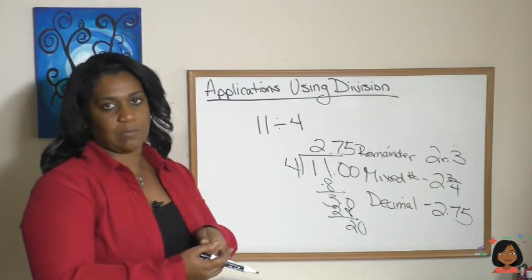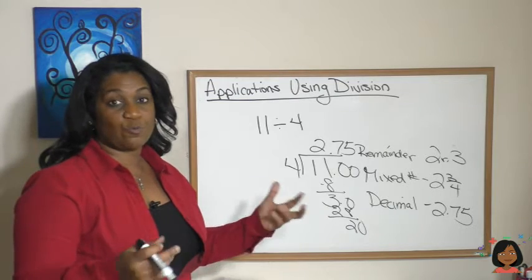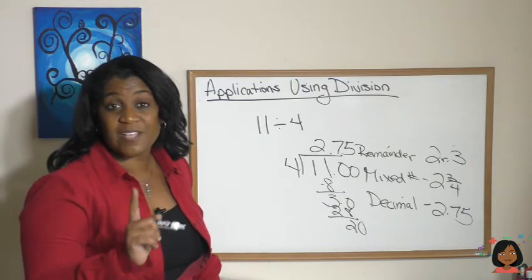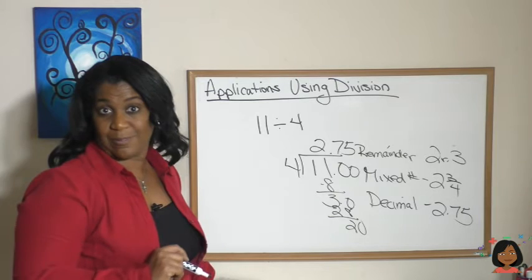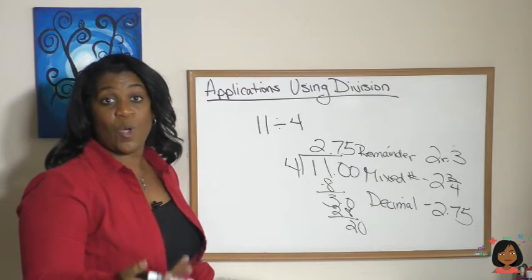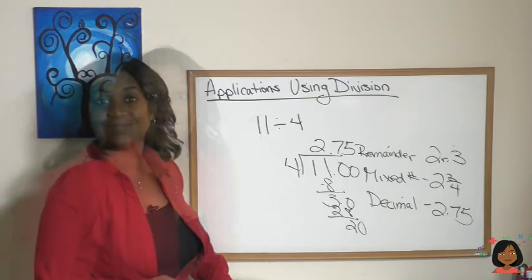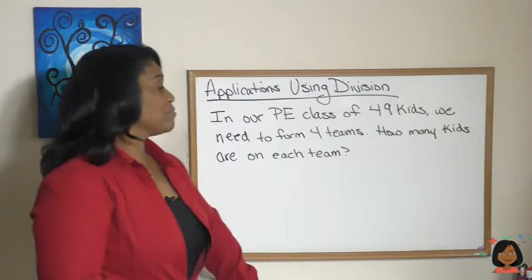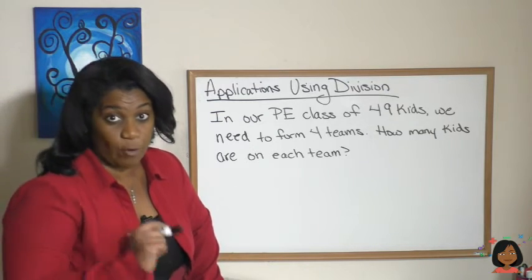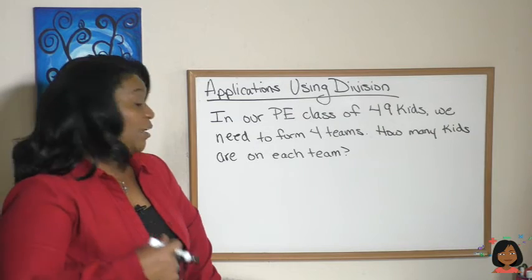Okay, three different ways to write it — but when you have word problems, how do you know which way to write your answer? It depends on the word problem. Let's look at a few word problems to figure out which is the best way to write our answer. Here's the first one: in our PE class of 49 kids, we need to form four teams. How many kids will be on each team?